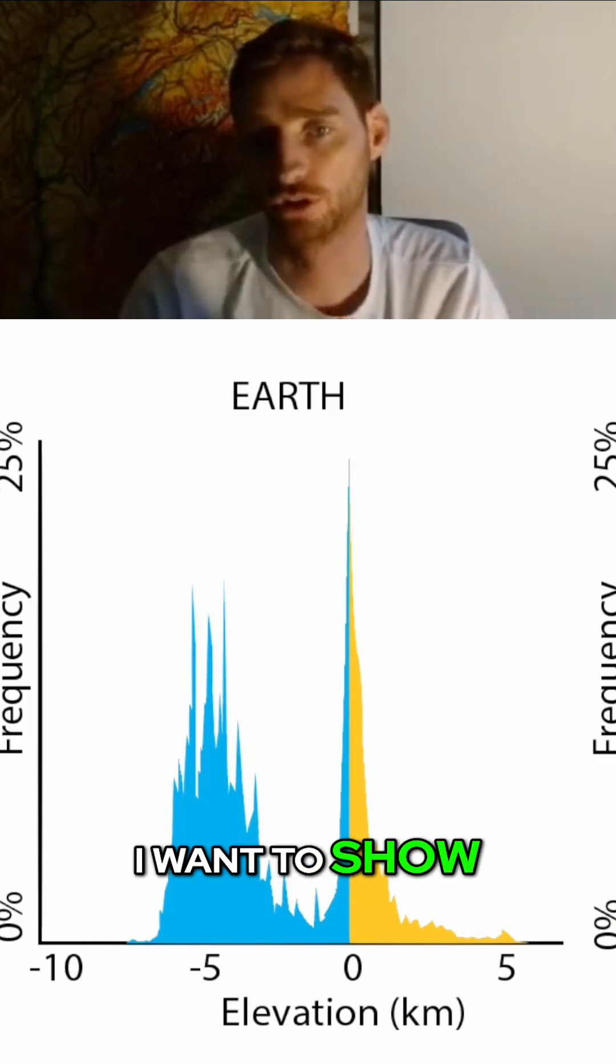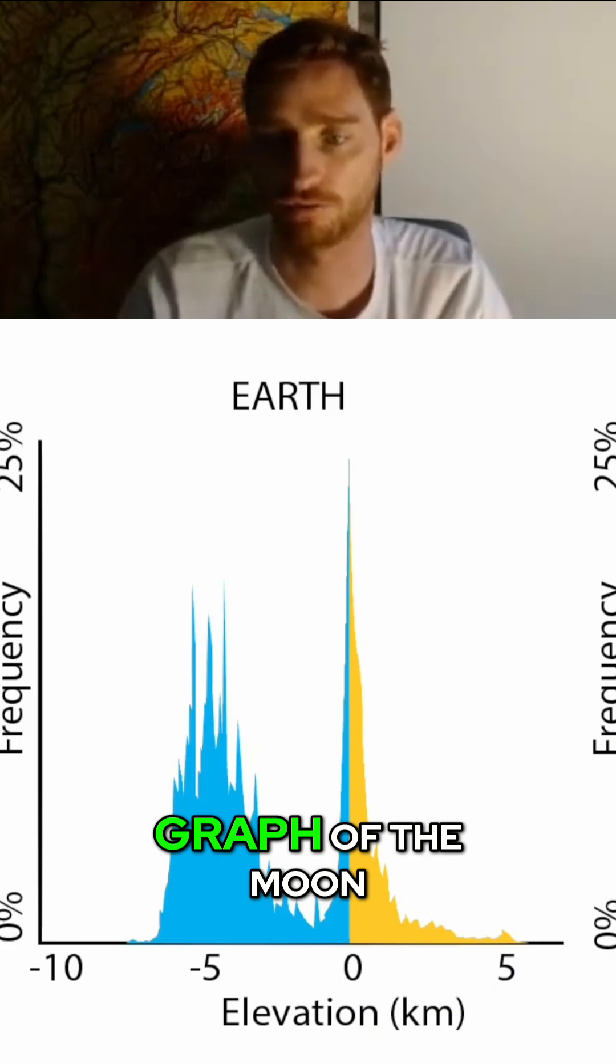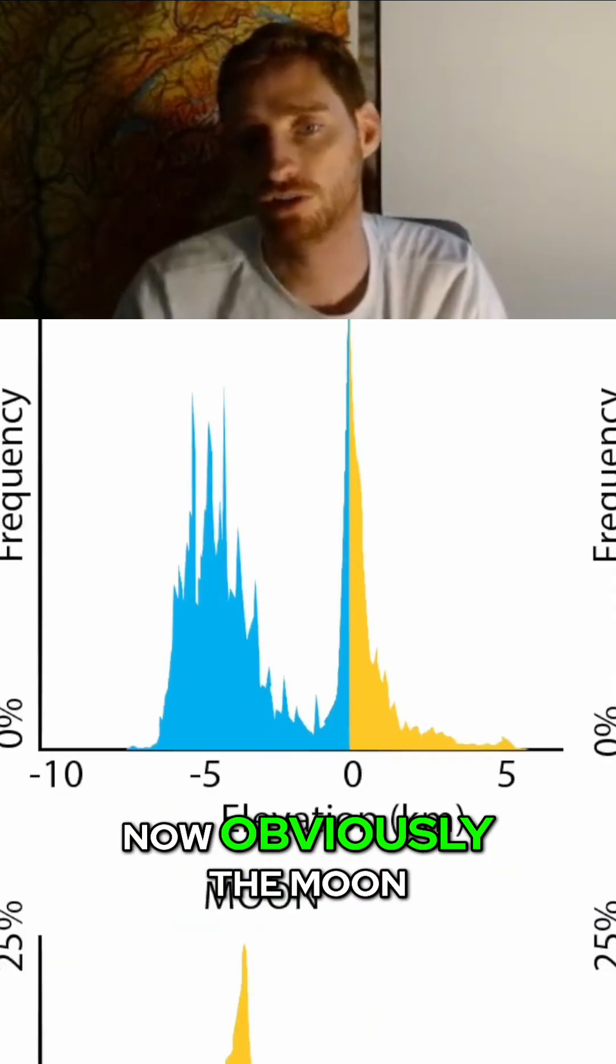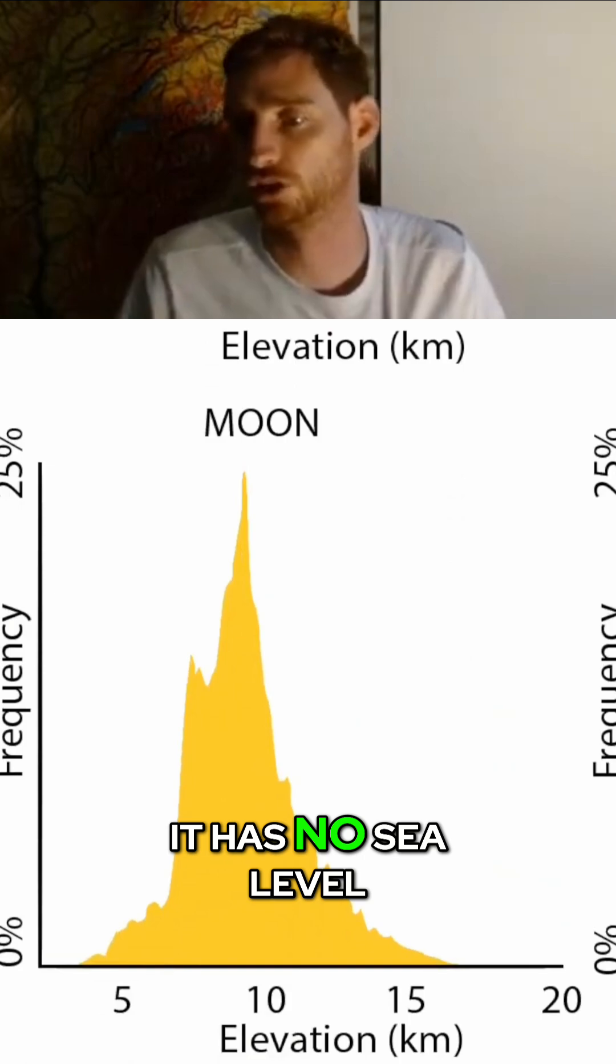So the next hypsograph I want to show you is a surface elevation distribution graph of the Moon. Now obviously the Moon has no oceans and it has no sea level.